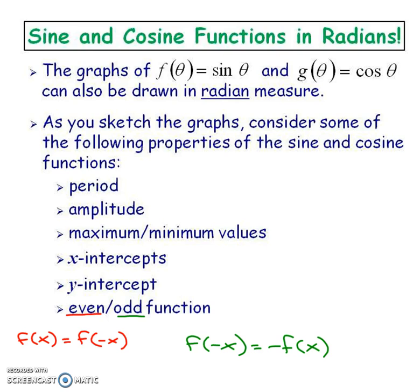Now sine and cosine functions in radians—that's the advanced functions spin where everything we did before was in degrees and now we're going to use radian measure instead. We're still going to look at period, amplitude, max and mins, intercepts, and here's a new thing: the even and odd function. Recall that an even function is where the original equals the horizontal flip. If the horizontal flip equals a vertical flip of the original, it's then an odd function.